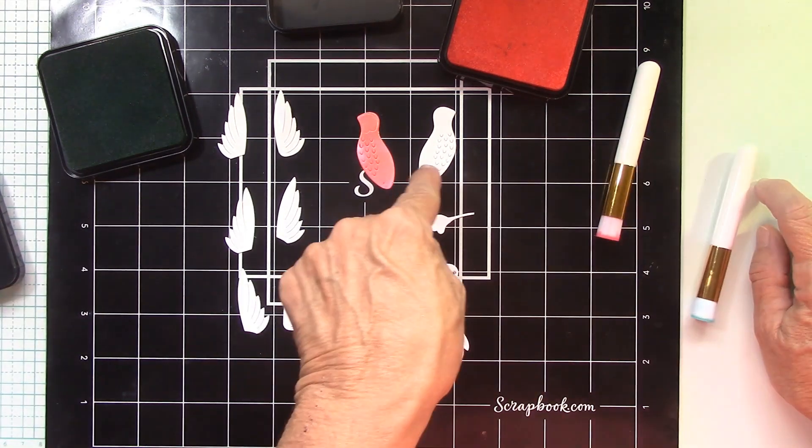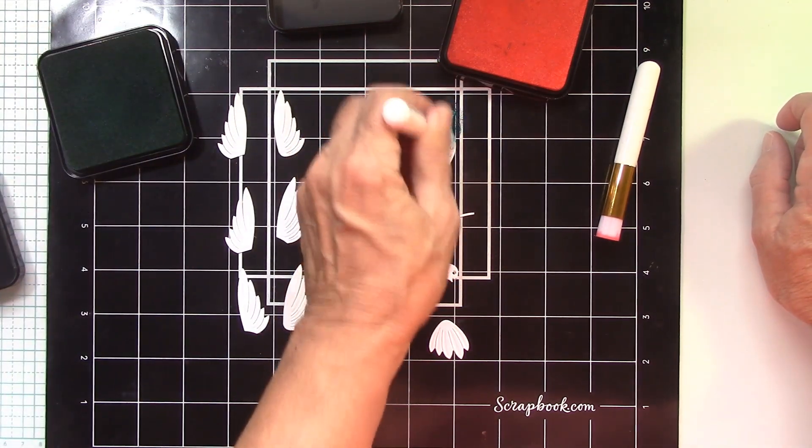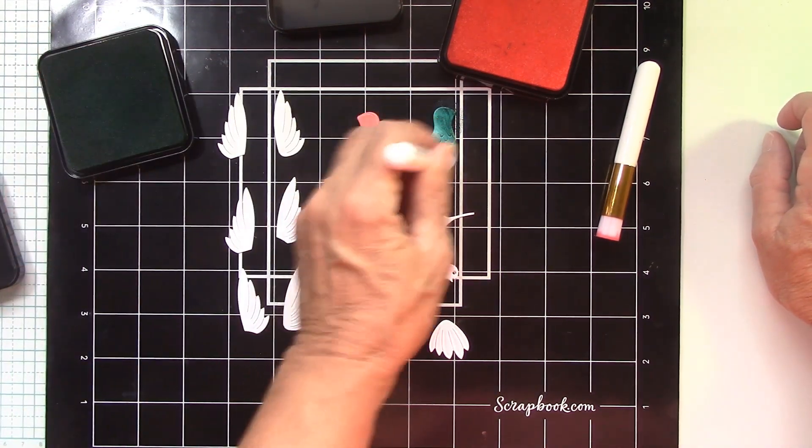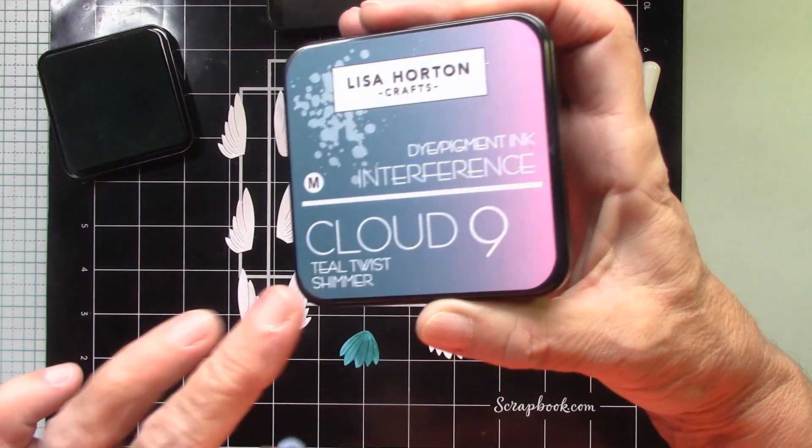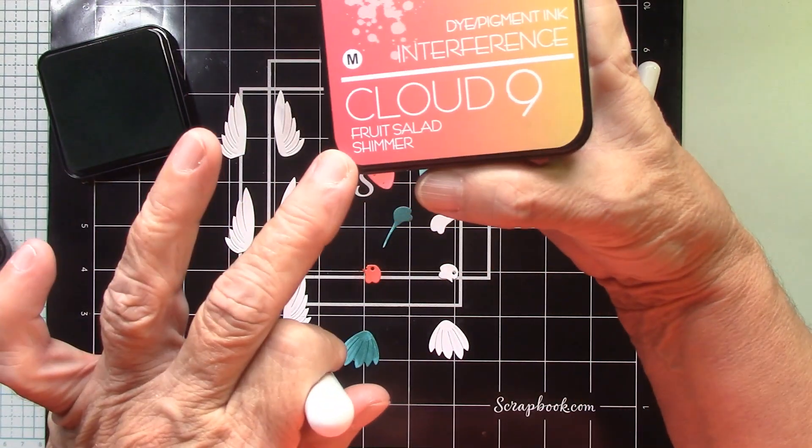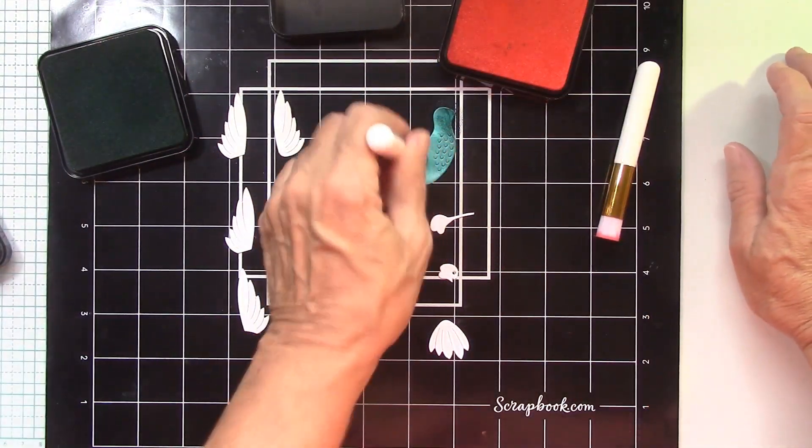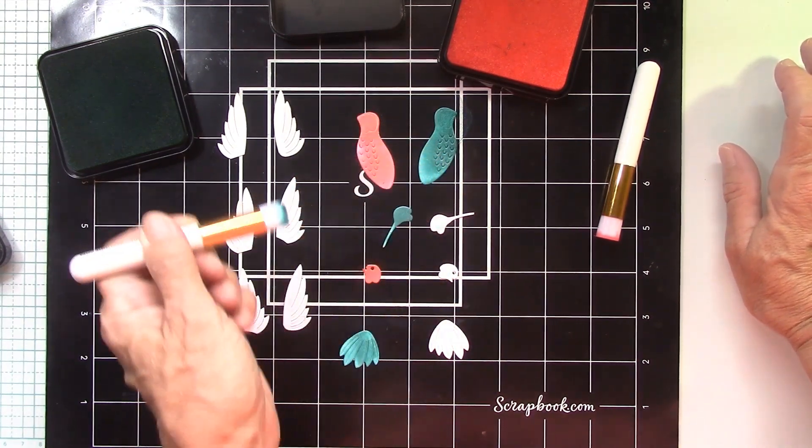Okay. Now this bird gets a blue body or the teal, I should say. This is teal. Right. Let's get the names right. This is teal twist and fruit salad. Teal twist and fruit salad.